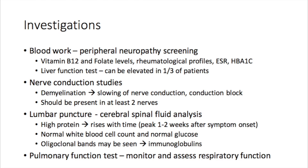Nerve conduction studies can be performed, looking for the presence of demyelination — a slowing of nerve conduction and nerve conduction blocks. Two nerves should be affected to assist in interpreting the results. Lumbar puncture can also be performed; the cerebrospinal fluid can show high protein that rises over time, despite having a normal white blood cell count and normal glucose. Oligoclonal bands may be seen, indicating immunoglobulin circulating in the body. Pulmonary function tests are also an important consideration to monitor respiratory function, since severe cases can involve respiratory compromise.